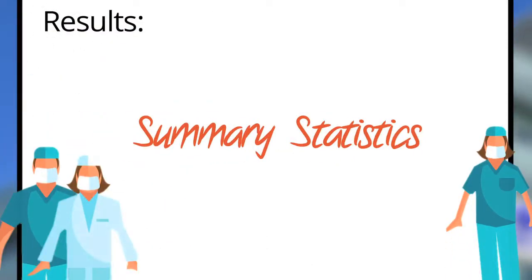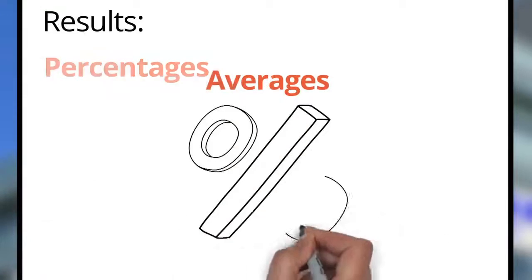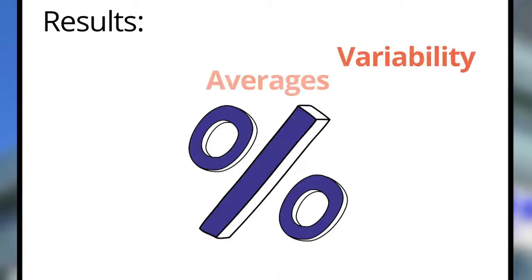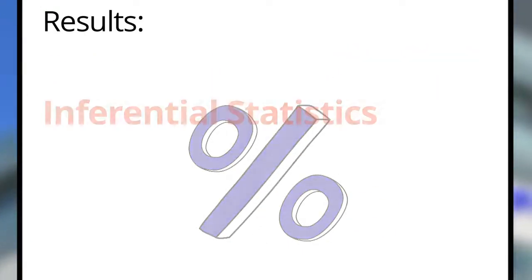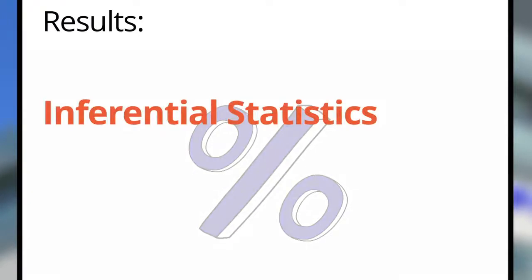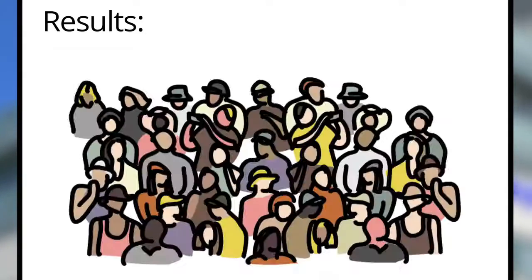It's typical to begin your results section with summary statistics. That is, you'll report values such as percentages, averages, and measures of variability. When applicable, this is then followed by inferential statistics, or analytic techniques used to draw conclusions about your broader target population.